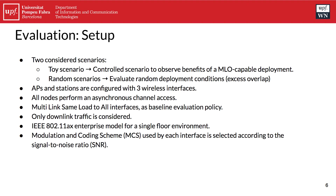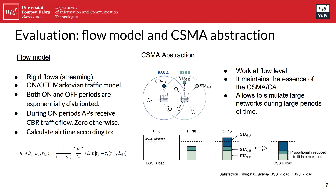Regarding modulation and coding scheme, it is selected through the calculation of propagation losses using the enterprise model, and the MCS is selected according to the signal-to-noise ratio. Before entering the results, let me explain the flow model we followed, in which we only considered rigid flows — a streaming type — in which each station requires different traffic values from the access point in an on-off Markovian traffic model.